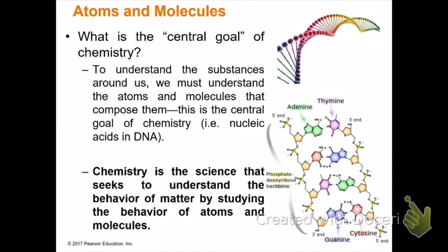This brings us to the central goal of chemistry: to understand the substances around us by first understanding the atoms and molecules that make them up. When you look closely at the molecular structure of DNA, you can see it's composed of nucleic acids such as adenine, thymine, guanine, and cytosine. Thymine forms two hydrogen bonds with adenine, whereas guanine forms three hydrogen bonds with cytosine. You can split DNA into two strands by breaking these hydrogen bonds, which takes energy.